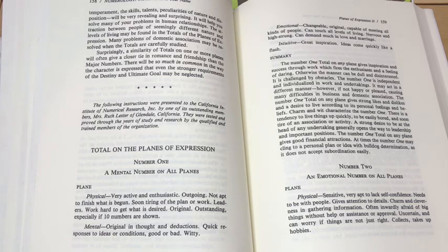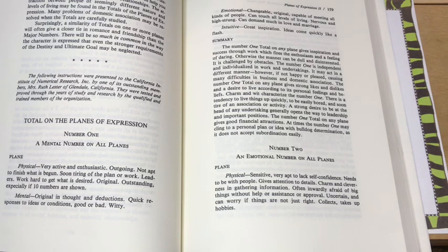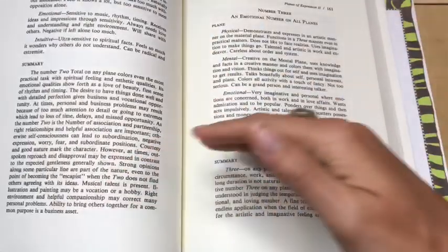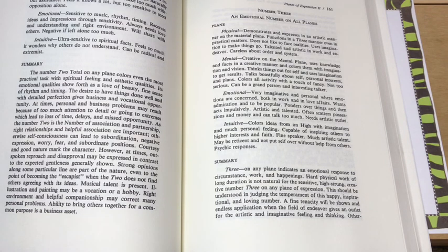If you got a number two on any of these planes, ooh, did I get a number two? I did on the physical plane. Let's take a look. Sensitive, very apt to lack self-confidence needs to be with people. I do. Gives attention to details, charm, and cleverness in gathering information. If you got a number two on the mental plane accumulates, collects knowledge, things, and information, strong and firm and convictions, although naturally cooperative and agreeable. A two emotional is sensitive to music, rhythm, timing. A two intuitive is ultra sensitive to spiritual facts.